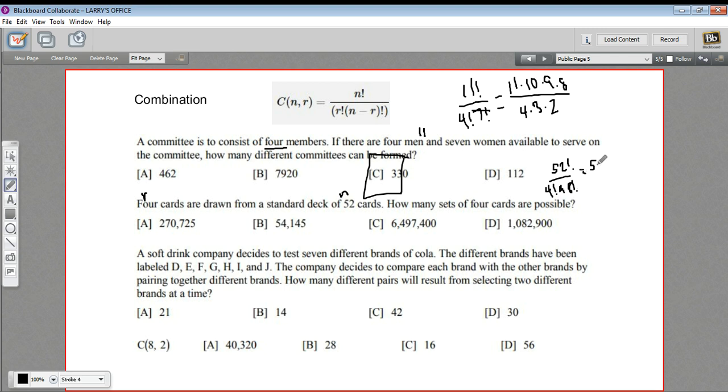So we can write this as 52 times 51 times 50 times 49. And then everything 48 down is going to cancel with this 48 factorial. And then this all goes over 4 factorial, which is 4 times 3 times 2. Let me pull out my calculator. So I'm punching in 52 times 51 times 50 times 49, and then we're going to divide by 24. And I got 270,725 ways to draw 4 cards from a standard deck.